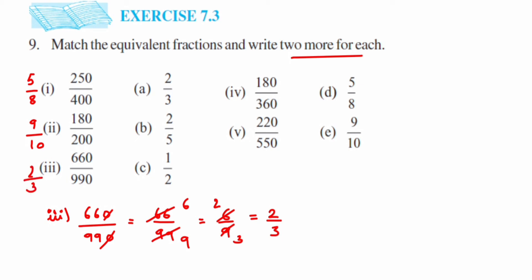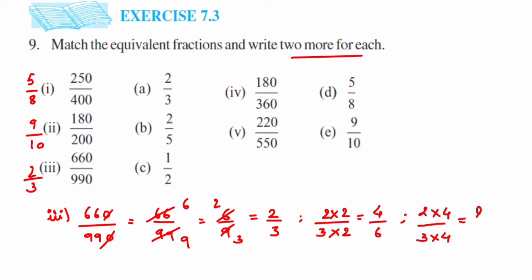Now I'm going to find equivalent fractions for 2/3. Multiply with small numbers to keep the multiplication easy. Multiplying by 2: numerator and denominator give 4 upon 6. One more equivalent fraction — multiply by 4: 2×4 = 8 and 3×4 = 12, so 8/12 is another equivalent fraction.